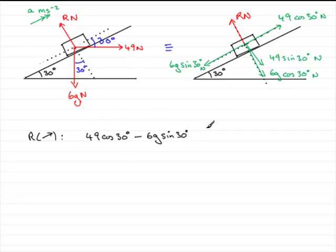So this is the resultant force, and it equals the mass times acceleration. The mass is 6kg. So we just write 6 in, and we have our acceleration A, which is what we're trying to find.